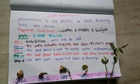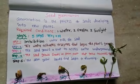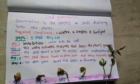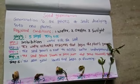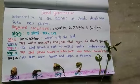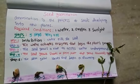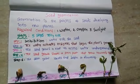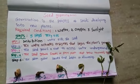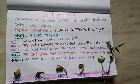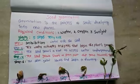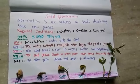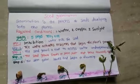Second, water activates enzymes that begin the plant's growth. Third, the seed grows a root to access water underground. Fourth, the seed grows shoots or a stem part that grows towards the sun. Step five, the stem grows leaves and begins to flower.